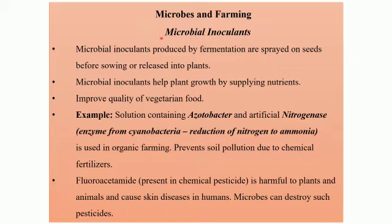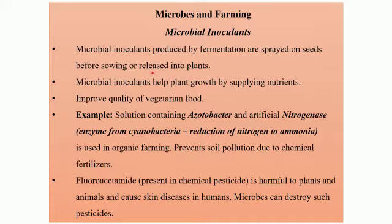Microbial inoculants. We have come across this word inoculant earlier also. Those microbes which are useful to us are grown in the laboratory, and then a small quantity of this microbe, which is called a microbial inoculant, can be used wherever required. Microbial inoculants produced by fermentation are sprayed on seeds before sowing or released into plants. Those microbes which are going to be helpful in the growth of the plant and provide it with essential nutrients are directly sprayed onto the seeds before they are sowed.